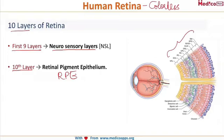To name these layers: the first layer towards the vitreous is the nerve fiber layer, followed by the ganglion cell layer, then the inner plexiform layer (IPL), the inner nuclear layer, the outer plexiform layer, the outer nuclear layer, the external limiting membrane, then the layer of rods and cones, and finally the retinal pigment epithelium.